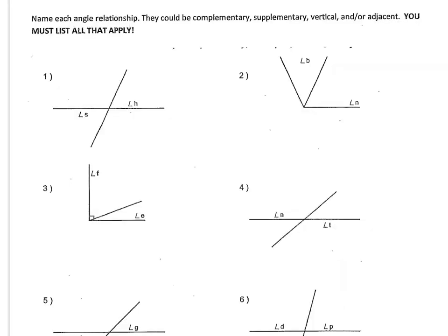We're going to practice classifying angles. Looking at number 1, this angle and this angle are formed by intersecting lines and they're opposite each other, so these are vertical angles. Number 2, this angle and this angle are right next to each other, so these would be adjacent angles. They do not form a 90 degree angle or a 180 degree angle, so they're not supplementary or complementary.